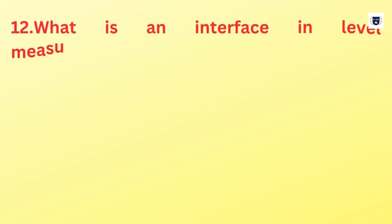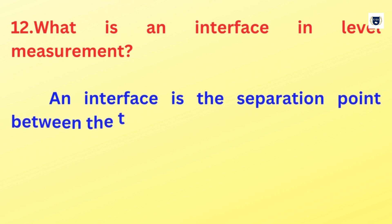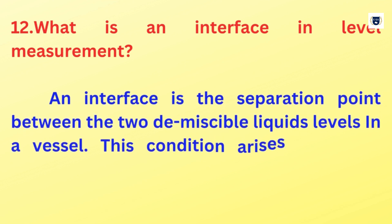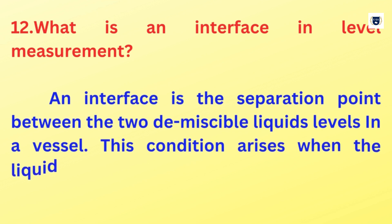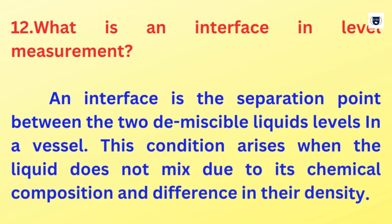What is an interface in level measurement? An interface is the separation point between two immiscible liquids in a vessel. This condition arises when the liquid does not mix due to its chemical composition and difference in density.